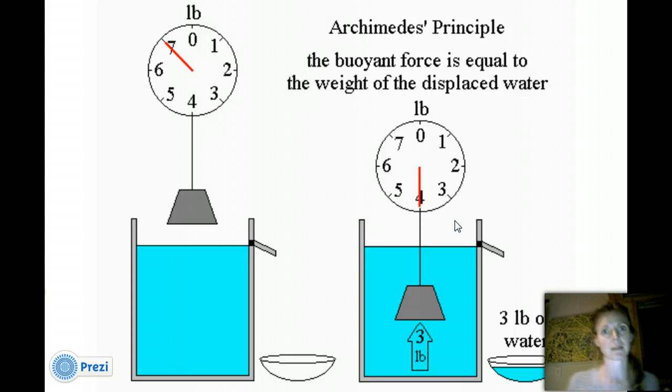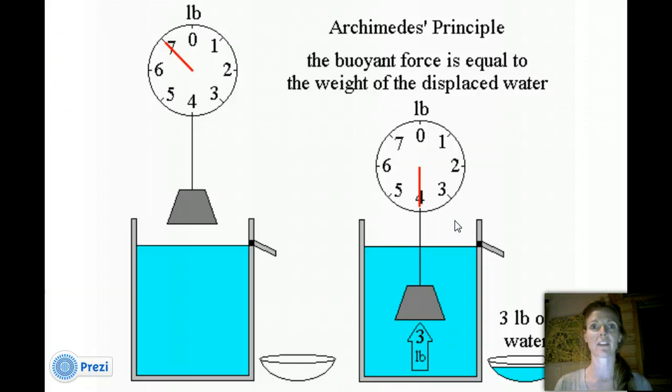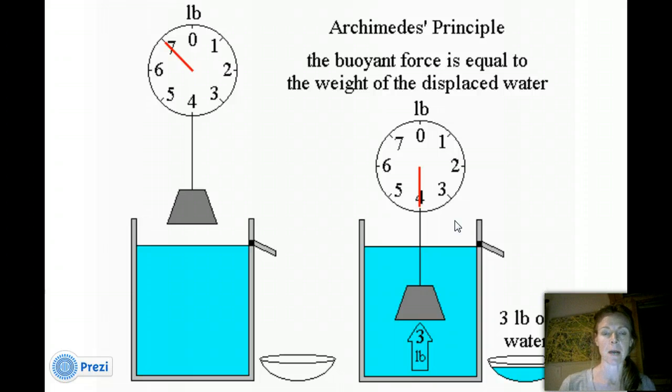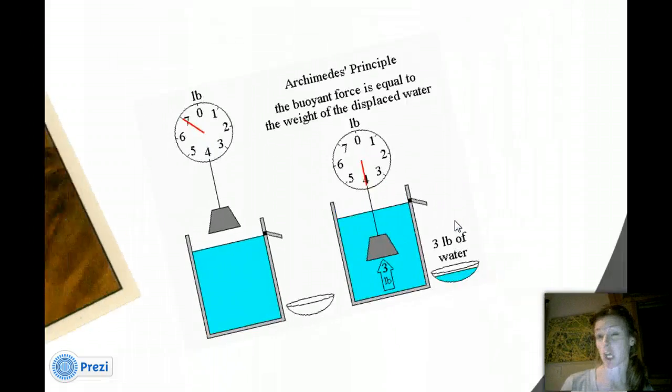And so, the story goes that, basically, he did that with a piece of gold that weighed the same as what the king had given this person to make a crown. So, he found out, okay, here's the displacement of real gold in that weight. Let's look at the crown now. And the crown displaced less weight, which means there was something other than gold in that crown. So basically, it was like, yay! He's amazing! He solved a crime! Anyway, so, he was kind of thought of as the first forensic scientist, but, again, he's known for many, many other things as well.